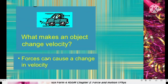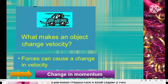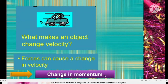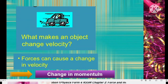Forces can cause a change in velocity. If there is a change in velocity, of course there will be a change in momentum. As we discussed before, momentum is a product of mass and velocity. For constant mass, momentum depends on velocity. So if there is a change in velocity, there will be a change in momentum.